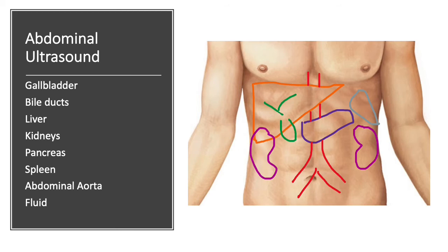We also look for any free fluid — fluid that shouldn't normally be in the abdomen. This can be a result of organ failure or some form of inflammation. So these are the major areas which are assessed with ultrasound, and give a good idea of what's going on to your doctor as the cause of your abdominal pain.